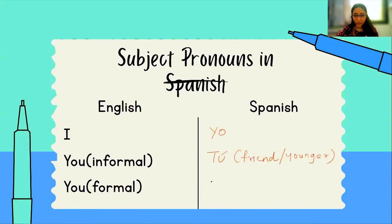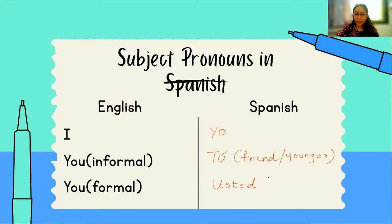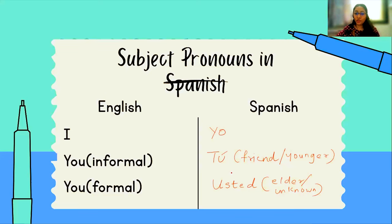Now let's assume you are talking to your school teacher or the principal of your college. You are not going to use 'tú' because it is informal. Instead, you are going to use 'usted' — U-S-T-E-D. Not just elders — someone unknown, someone you are talking to for the first time, your father's friend, your mother's friend, someone who holds a title — you use 'usted.' So: 'yo' is I, 'tú' is informal you, and 'usted' is formal you.